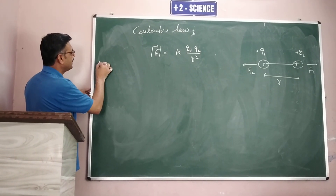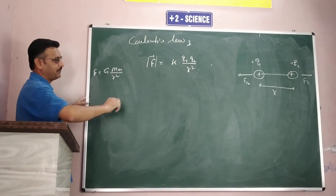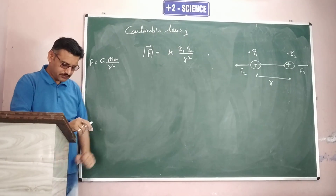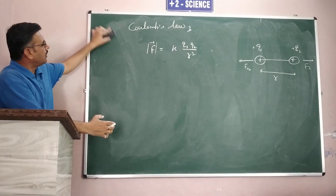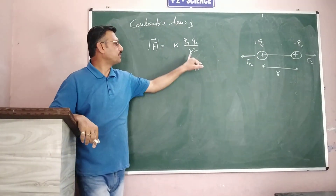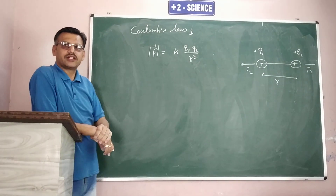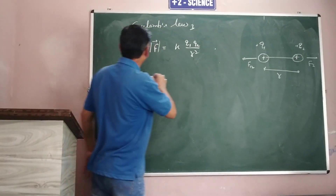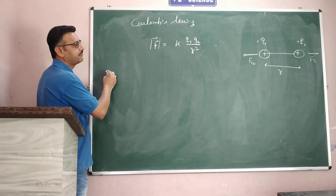This law is similar to Newton's law of gravitation. Newton's law of gravitation says that force between two masses follows an inverse square law. So this law is equivalent — the statement is similar, except here we replace mass with charge. This law also holds the inverse square law: force is inversely proportional to the square of the distance and directly proportional to the product of the charges. Because force is a vector quantity, we need to discuss the vector form of this law.